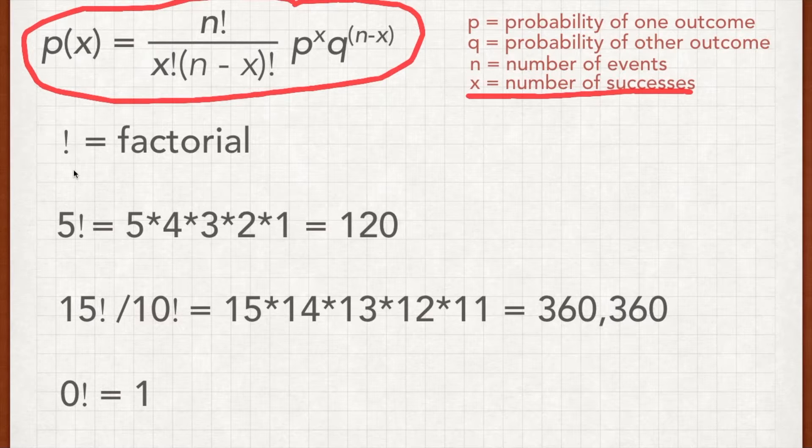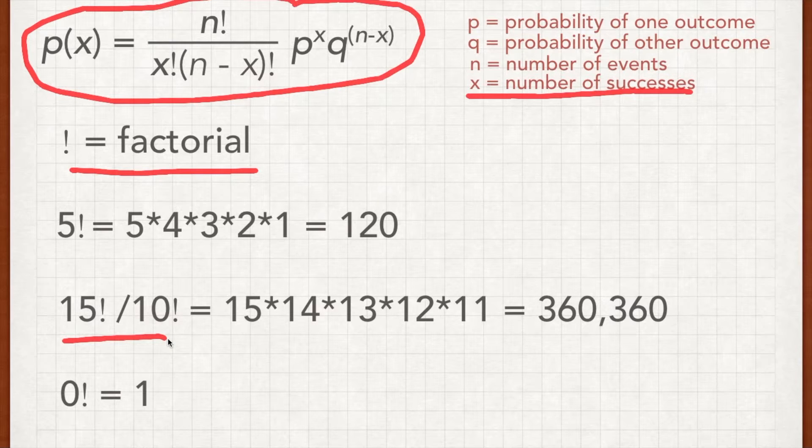What's new here is this factorial symbol. And the factorial simply means that you multiply all of the numbers before that number together. So 5 factorial is 5 times 4 times 3 times 2 times 1. There are some properties of this that you can take advantage of if you're doing these by hand. For instance, 15 factorial divided by 10 factorial divides out all of the numbers less than 10. So it's just 15 times 14 times 13 times 12 times 11, which is an enormous number. And 0 factorial is equal to 1.